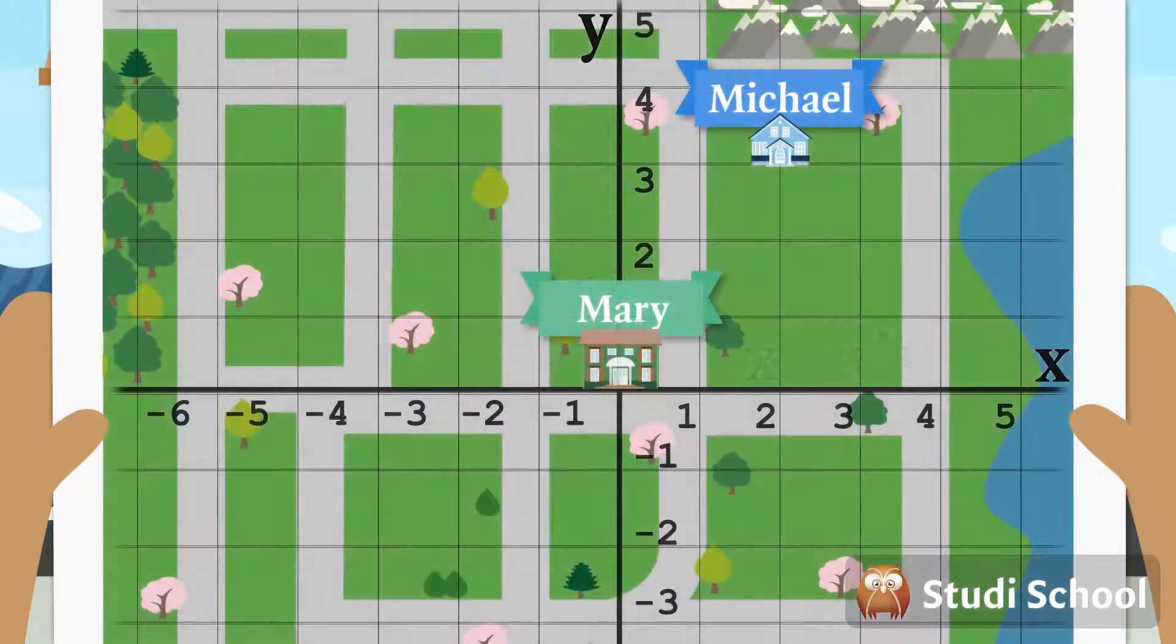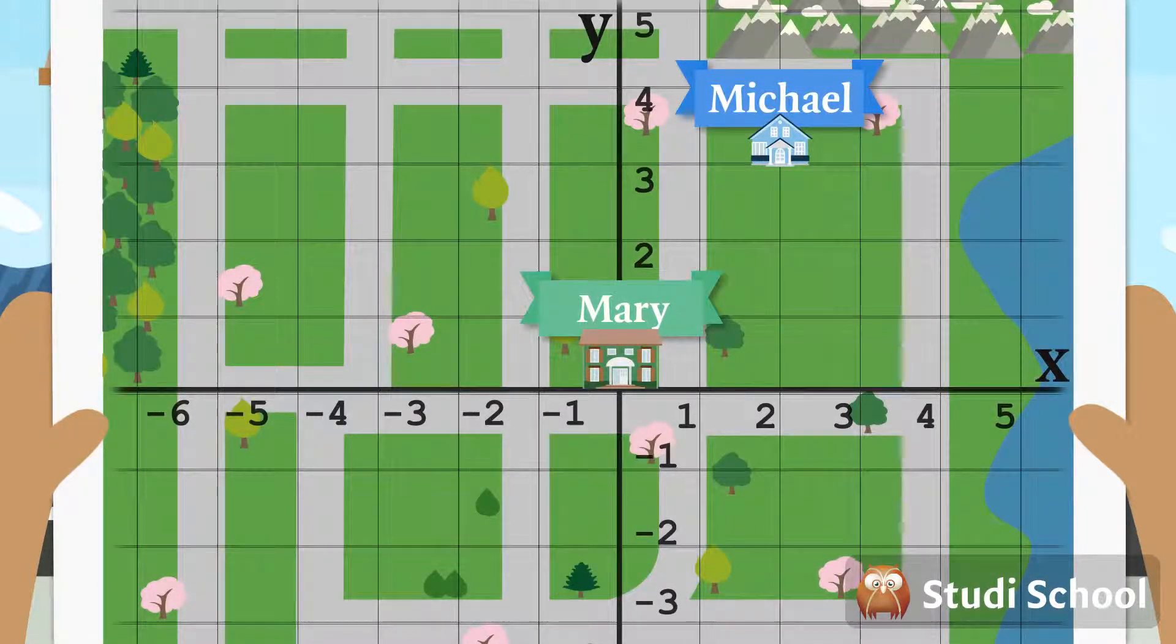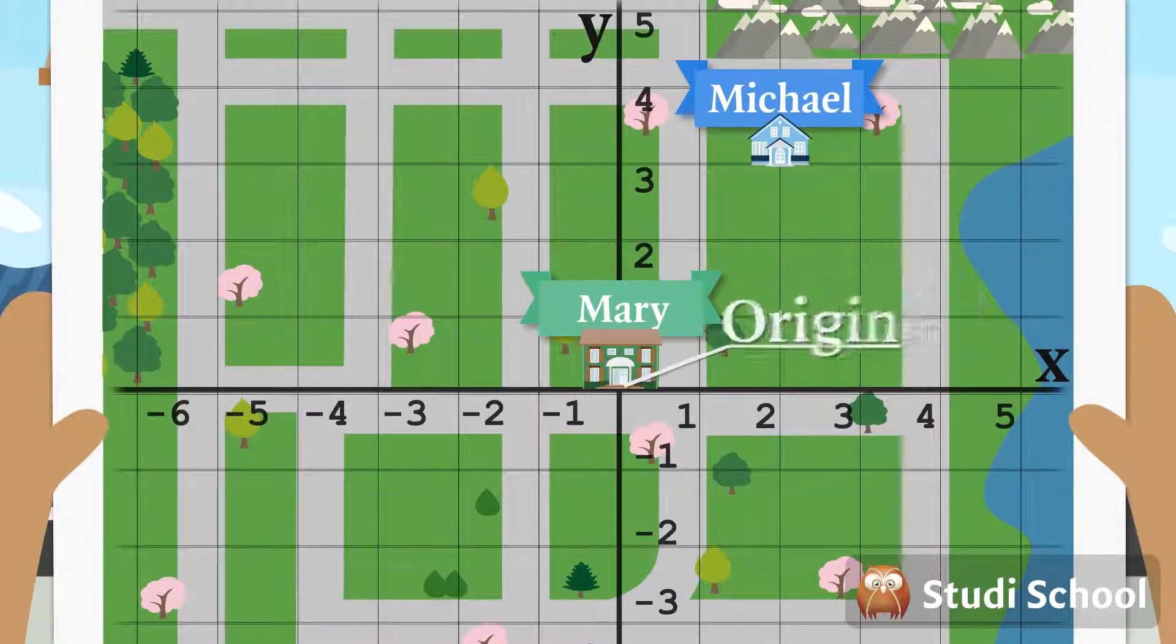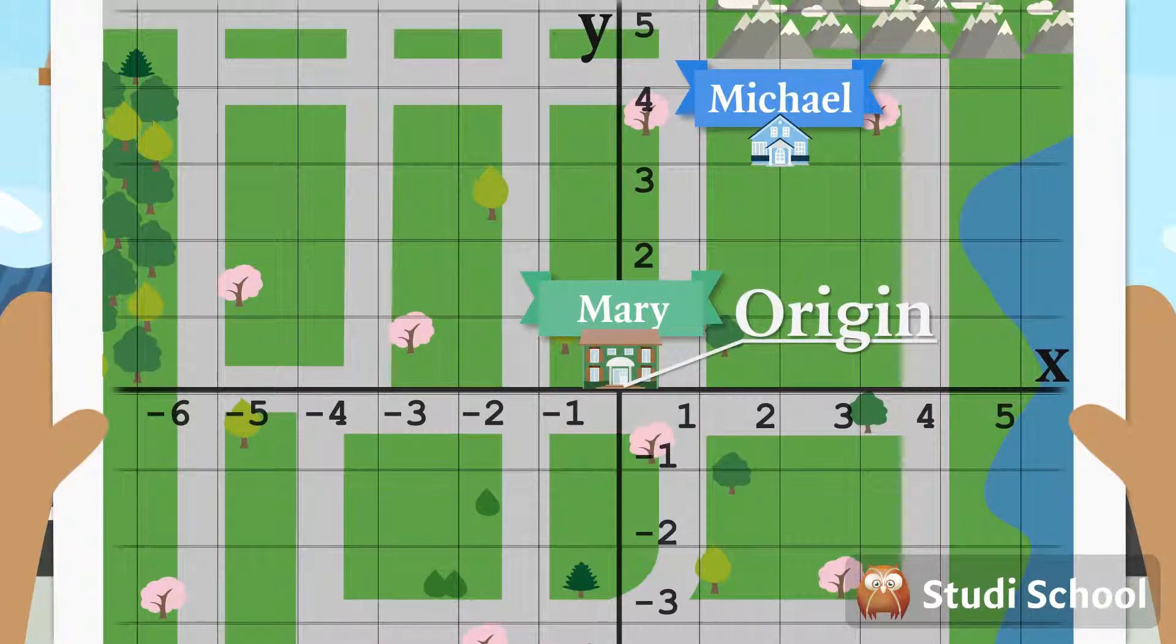Mary's house is where the axes cross. This place is called the origin. At the origin, X and Y are both zero.